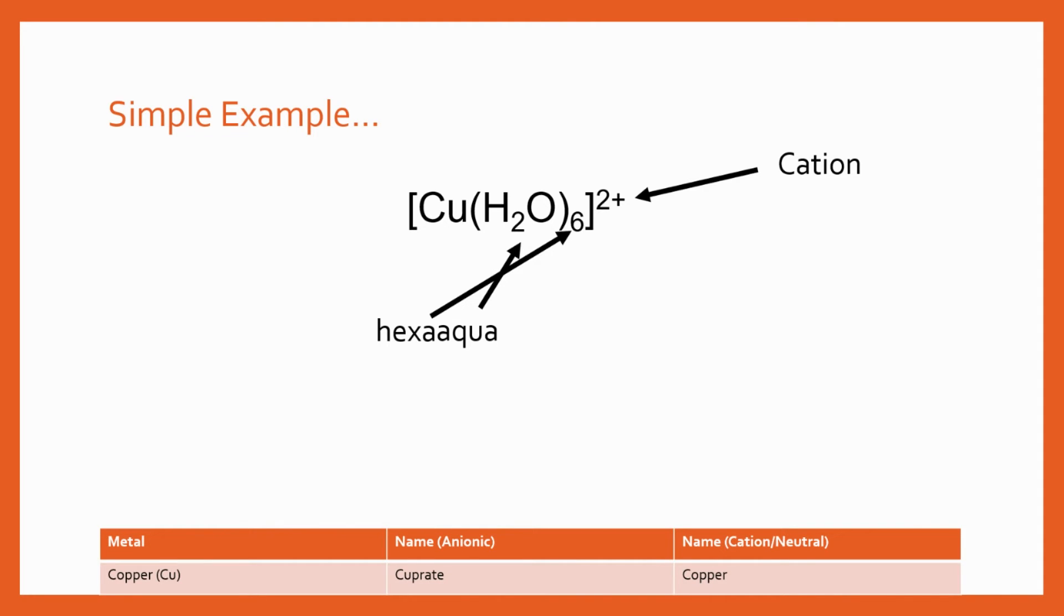Then we've got an H2O ligand so that's going to be aqua. Then we look at our table and I've cut from the table before. We've got copper and if it's anionic it's going to be cuprate and if it's a cation or neutral it's going to be copper. In this case we've got a cation so that's going to be copper.